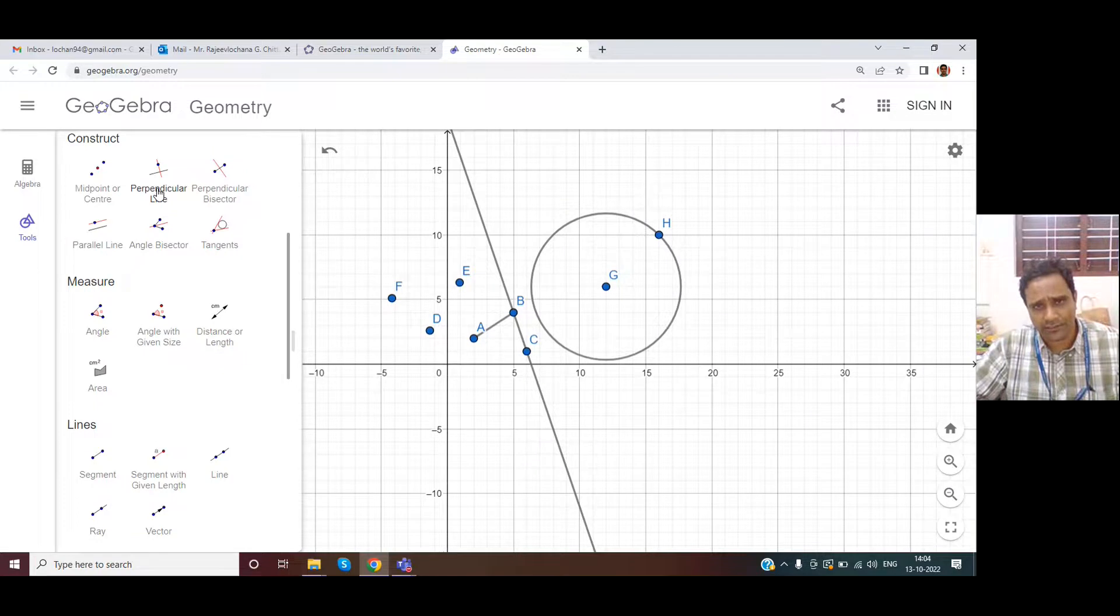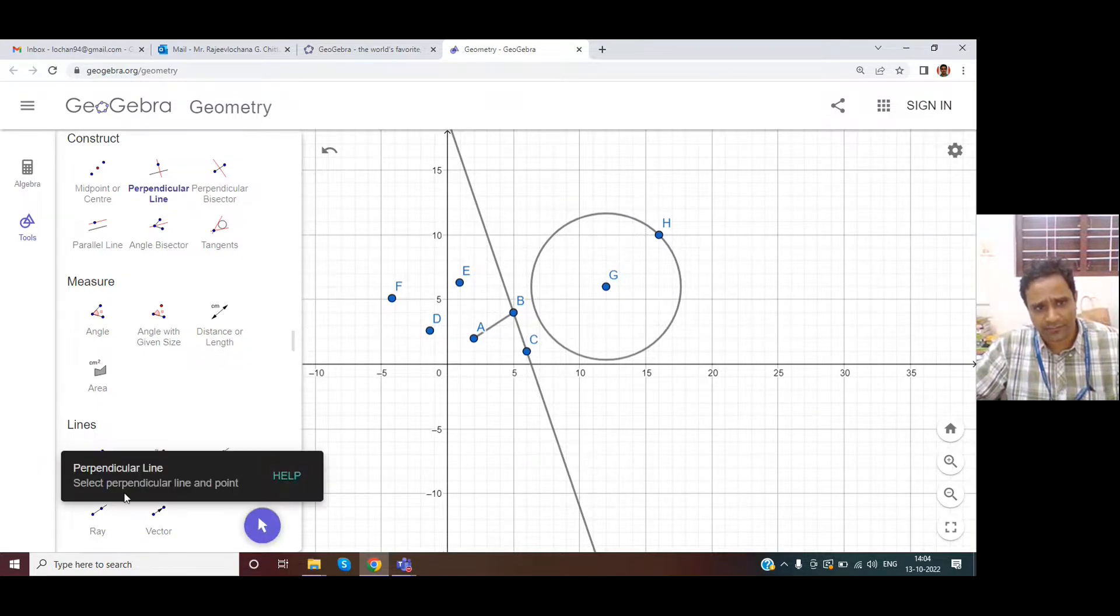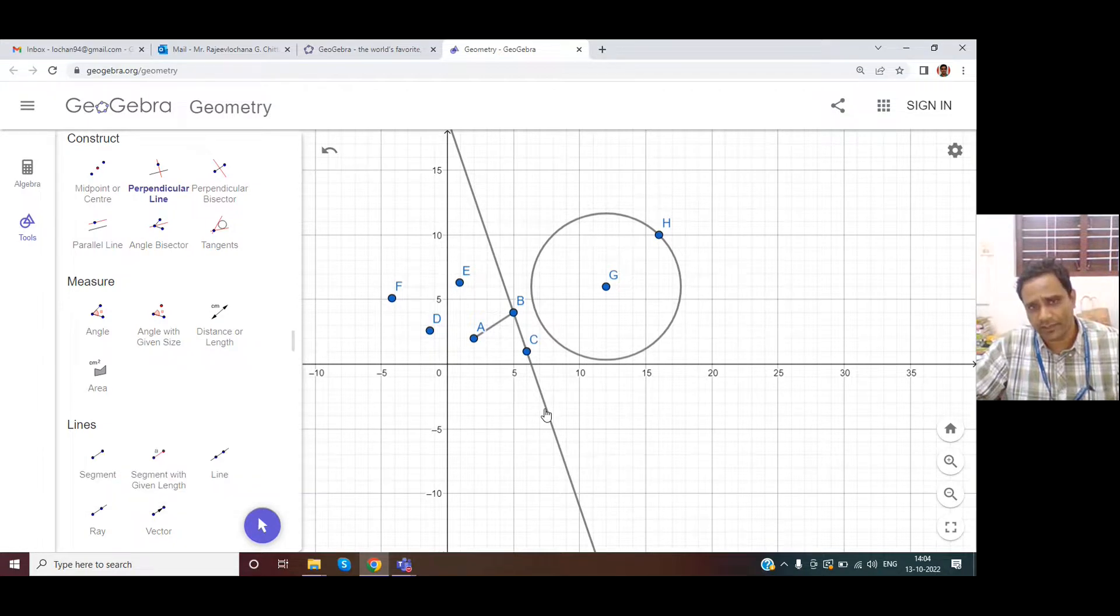You can draw a line perpendicular to another line. For example, if I select this, it says select perpendicular line and point. I want a line that is perpendicular to this and maybe passing through point C.